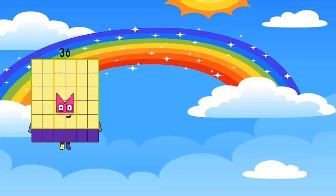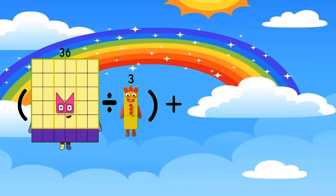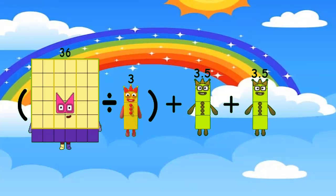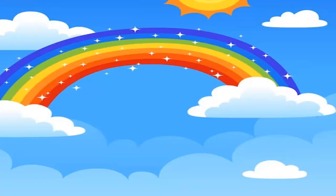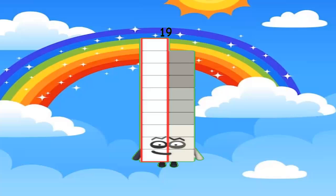36 divided by 3, open brackets, plus 3.5, plus 3.5 — equals 19. Good answer.